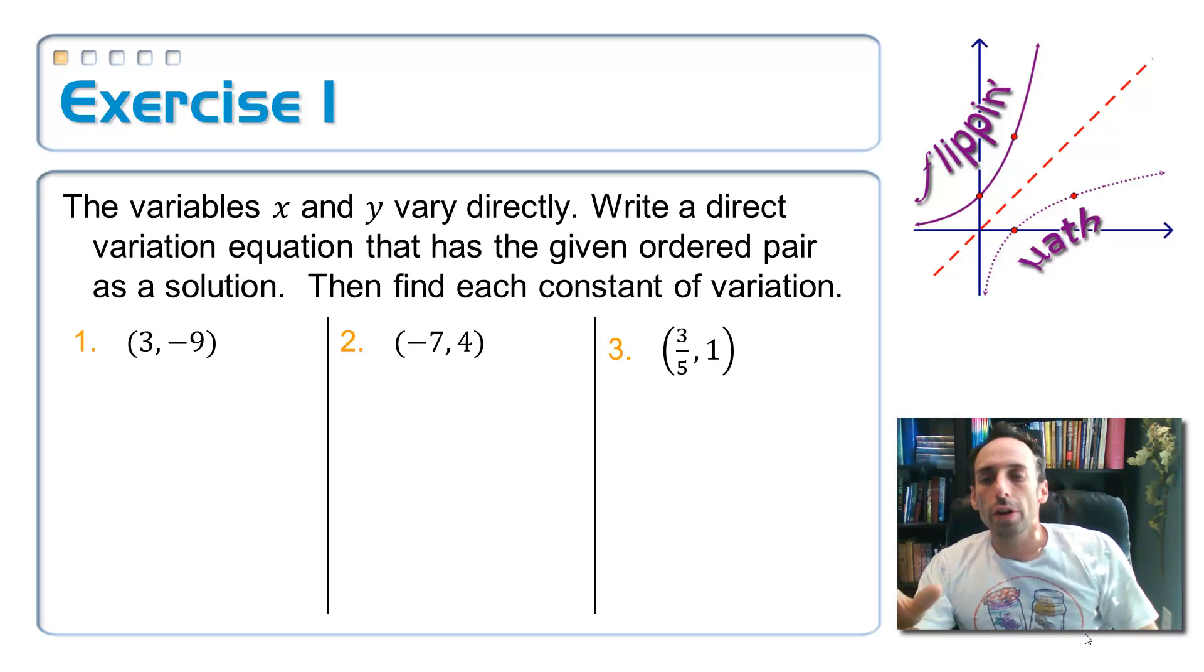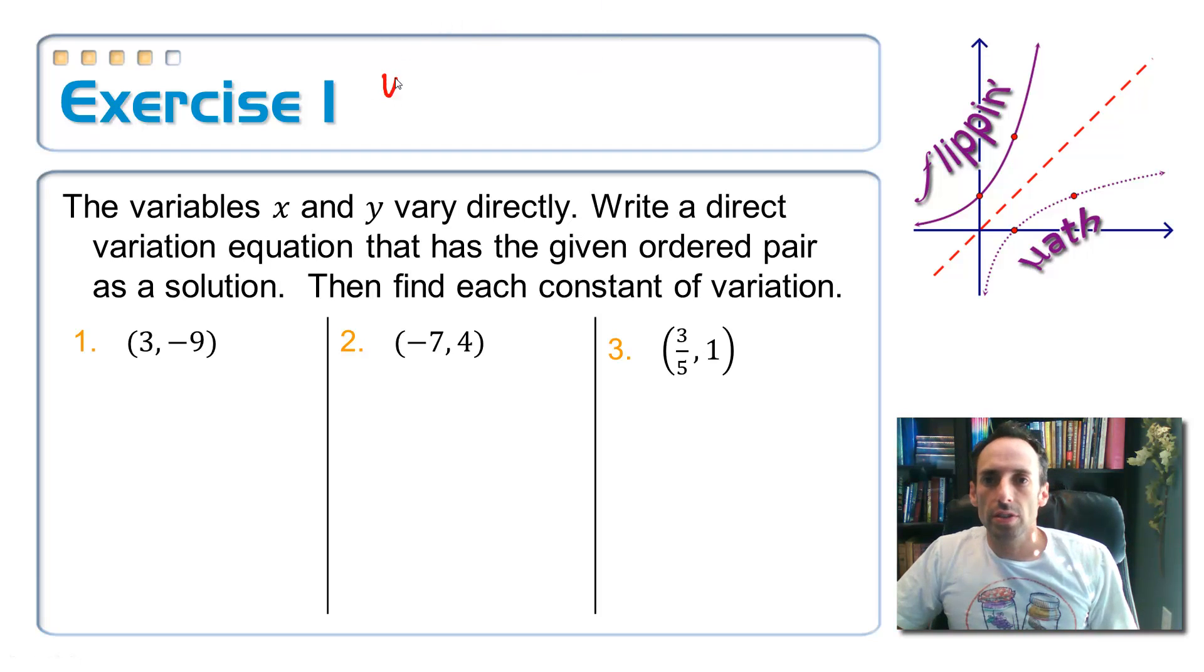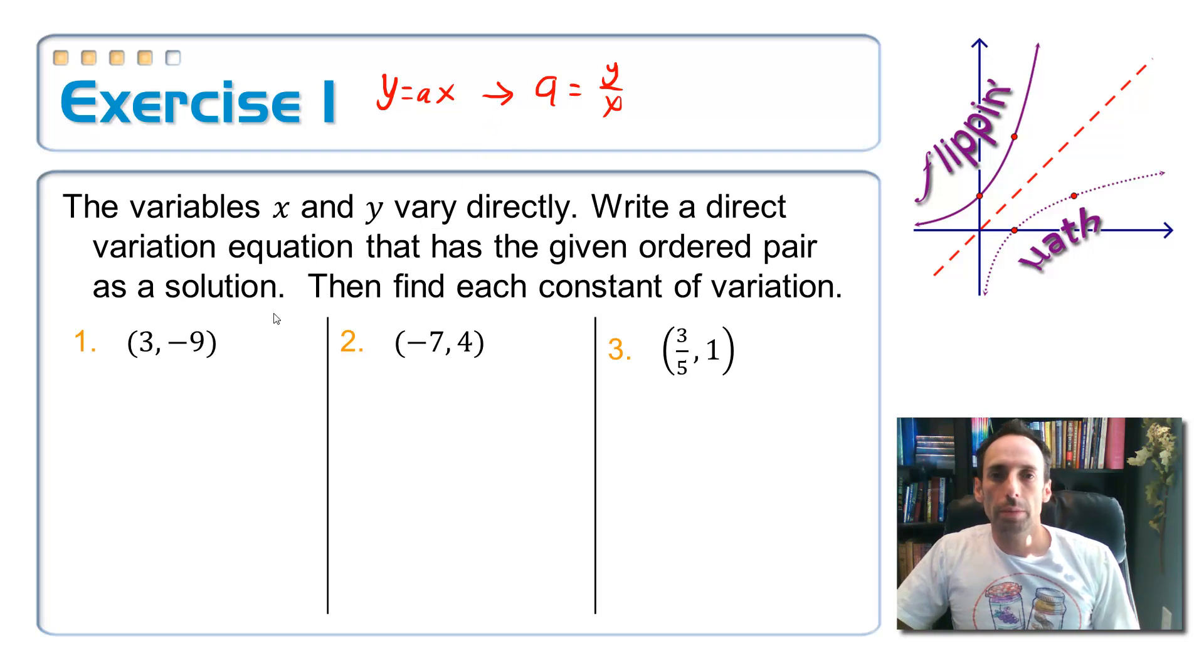So, the variables x and y vary directly. Write a direct variation equation that has the given ordered pair as a solution, and then find each constant of variation. And notice that all we need is one point on this line in order to write its equation if it shows direct variation. And the reason why is because you're automatically given another one, which is the origin, 0, 0. But hey, you don't even have to think that hard. Let's just take this equation, y equals ax, and let's solve it for the constant of variation. I would just divide the x over, and a would be equal to y over x. So if I take my y coordinate, divide it by my x coordinate, I automatically get my constant of variation.